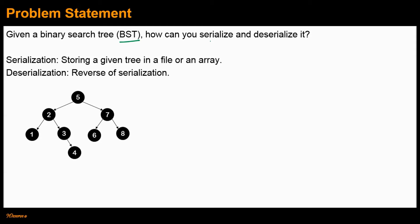Let's first define what serialization and deserialization are. In serialization, the input is a binary tree and we store the given tree in a file or array such that we can recover the original binary tree from it. Deserialization is the reverse: the input is a file or array and we reconstruct the original binary tree. So in serialization, input is a tree and output is a file or array; in deserialization, input is a file or array and output is the original binary tree.